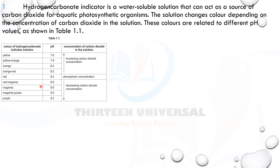When carbon dioxide concentration decreases — as in photosynthesis — the color shifts from red through magenta to purple, meaning pH increases and the solution becomes more alkaline. Conversely, when CO₂ concentration increases due to respiration, the color shifts toward yellow. So you need to interpret whether CO₂ is being used (photosynthesis) or produced (respiration) from the color change.